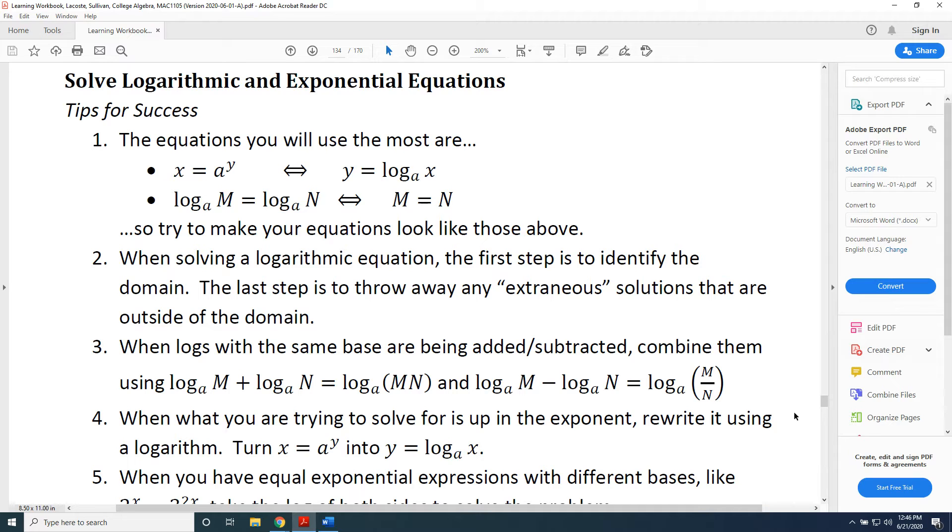The other rule, rule seven, is log base a of m minus log base a of n equals log base a of the quotient m over n. And just as before, all logs must have the same base with no number in front of the word log.